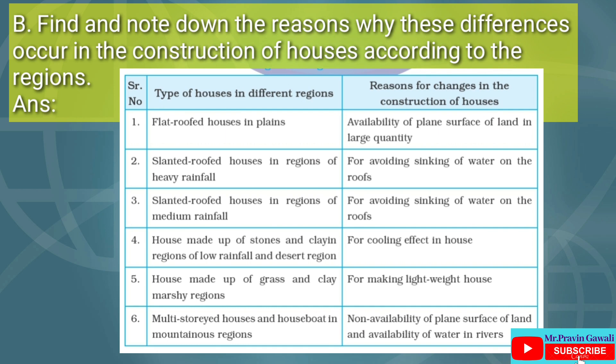Fifth: houses made of grass and clay in marshy regions — the reason is for making a lightweight house. Sixth: multi-storied houses and houseboats in mountainous regions — the reason is non-availability of plain surface of land and availability of water in rivers.